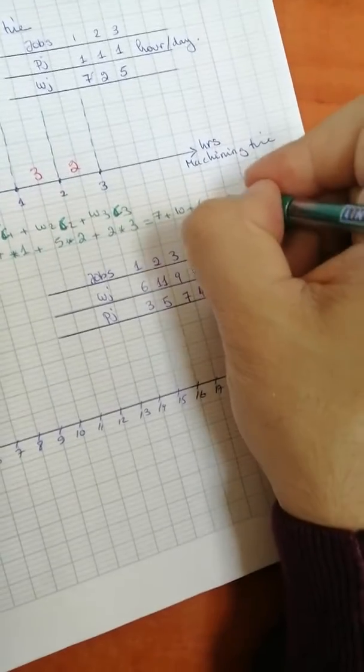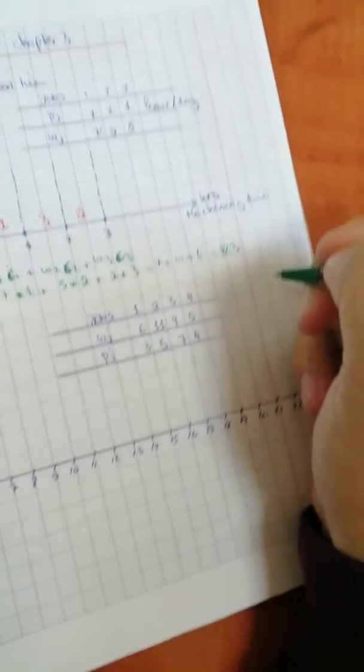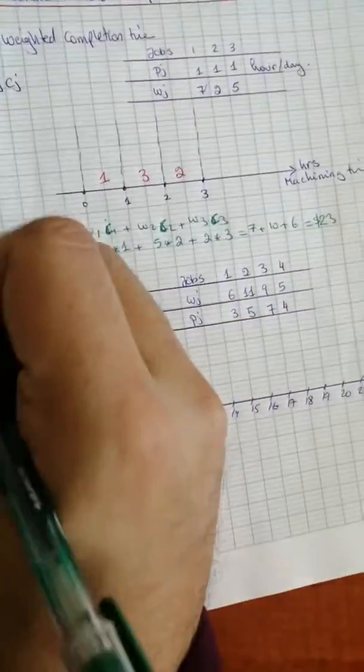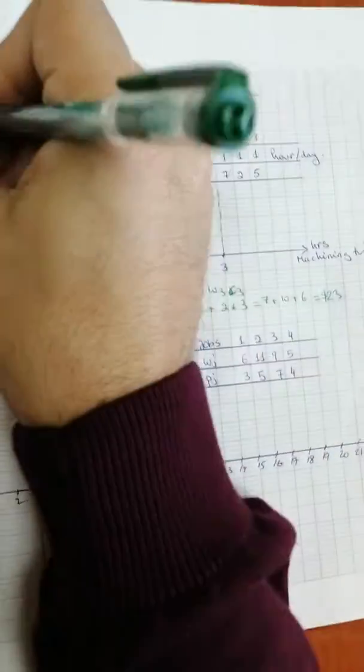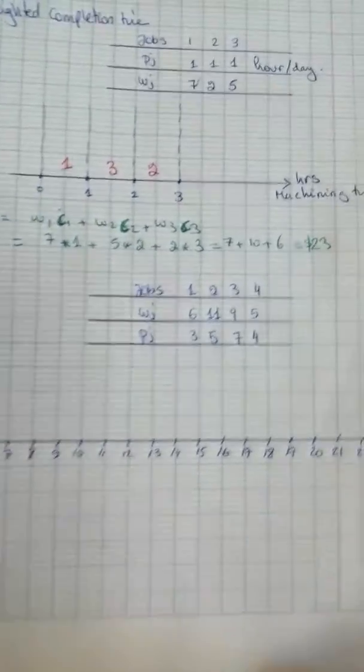And the weight for job 2 equals 2 times 3. So this is 7 plus 10 plus 6, which equals $23. If we have different processing times, as we can see here in example 2, with different processing times...